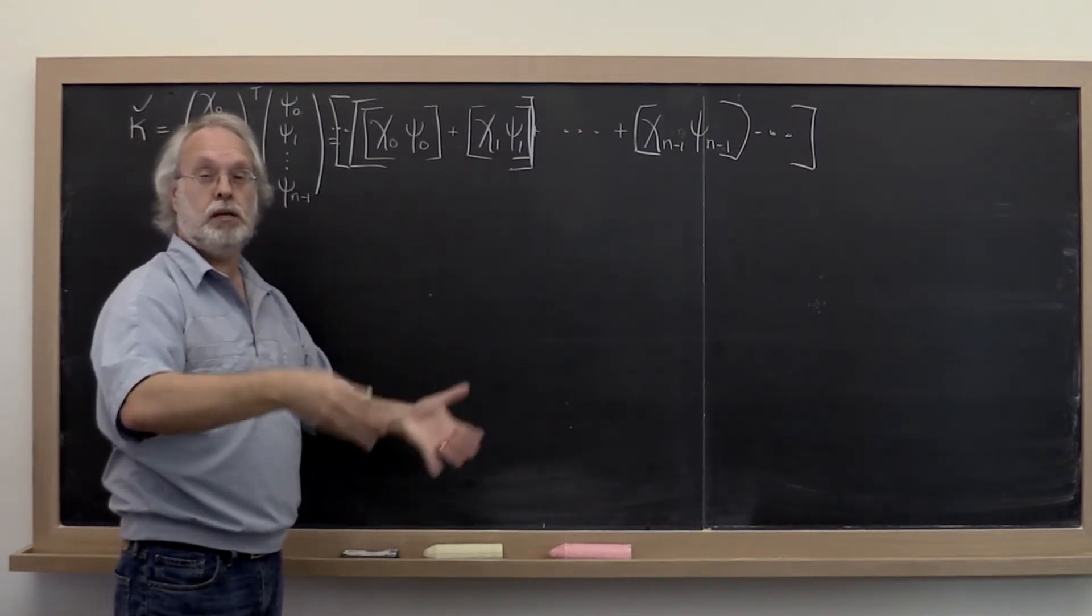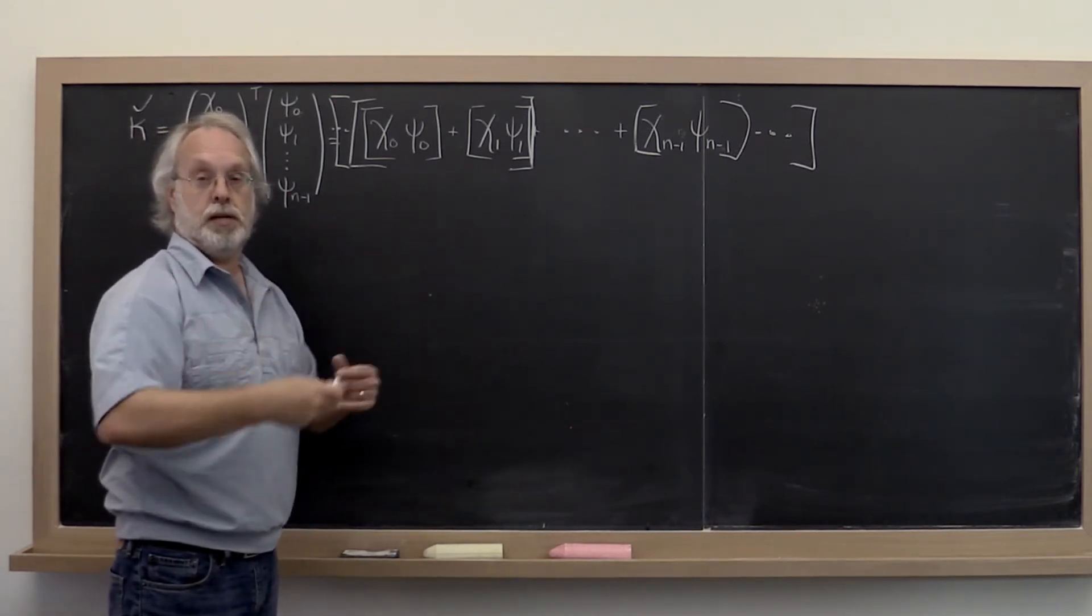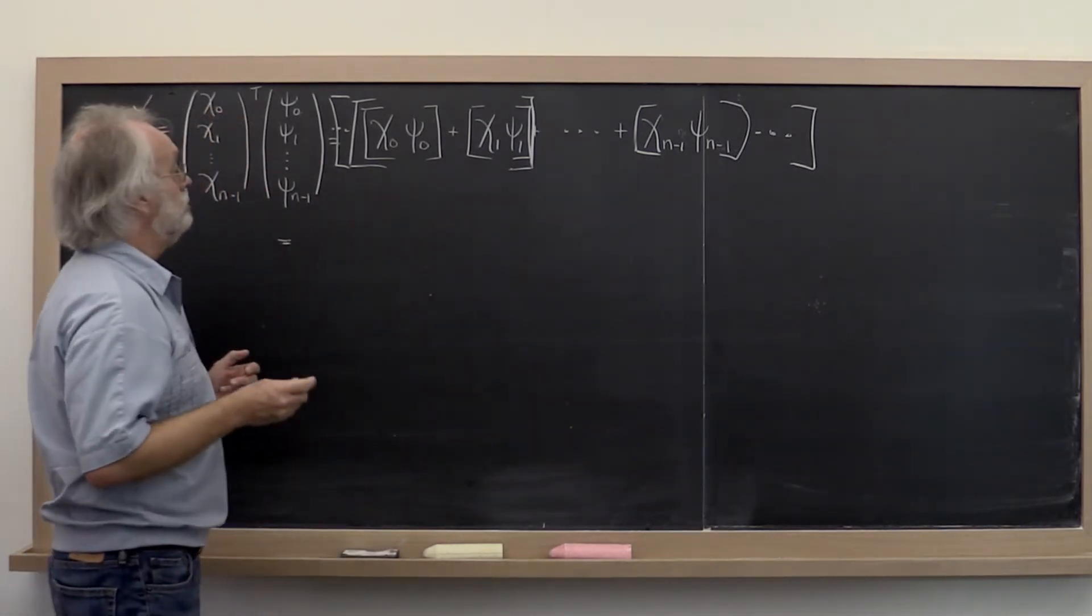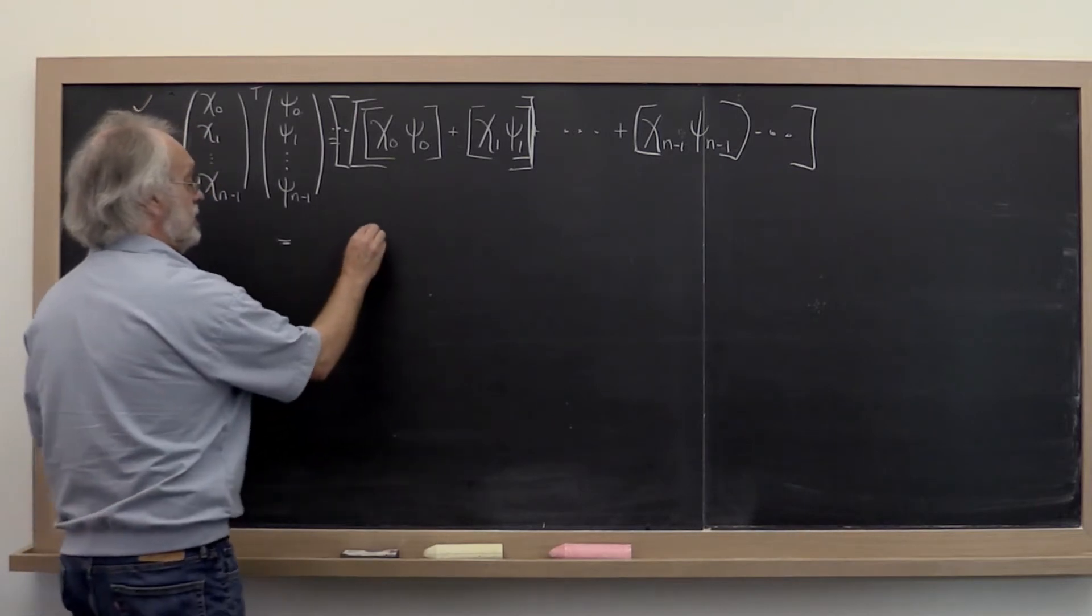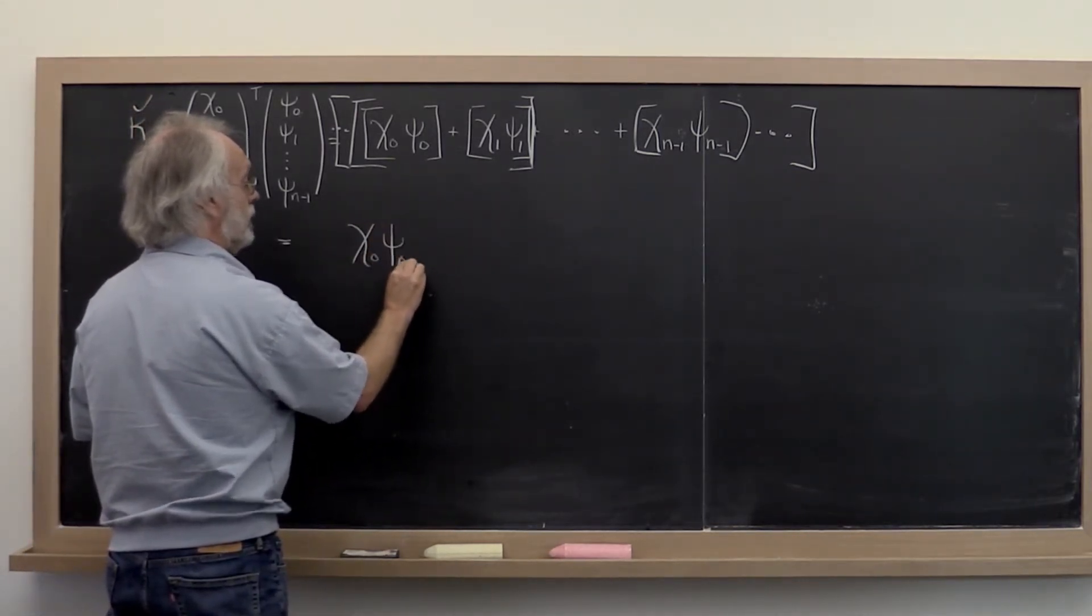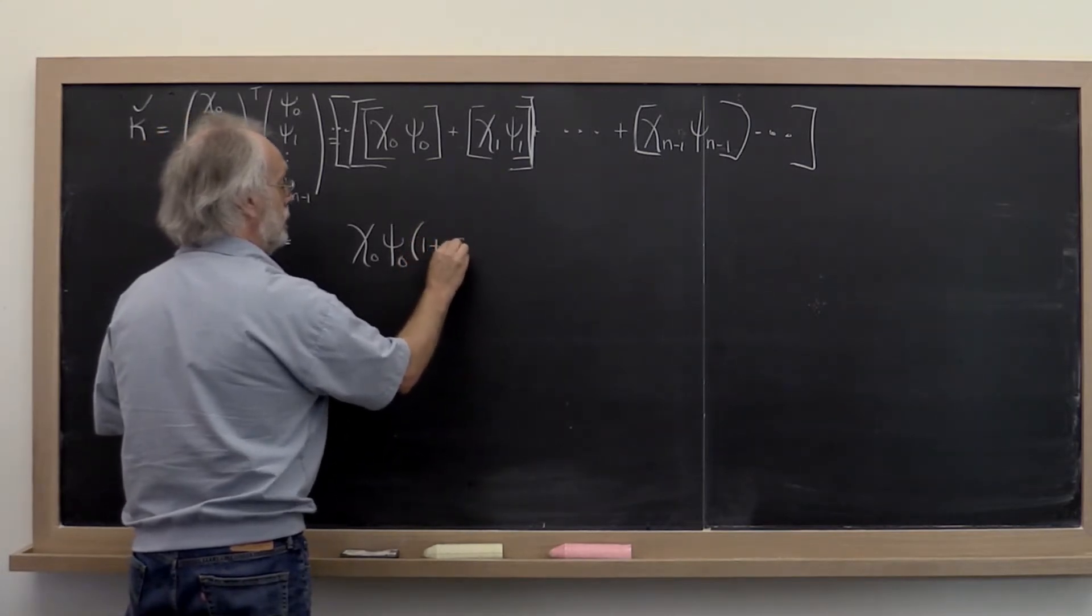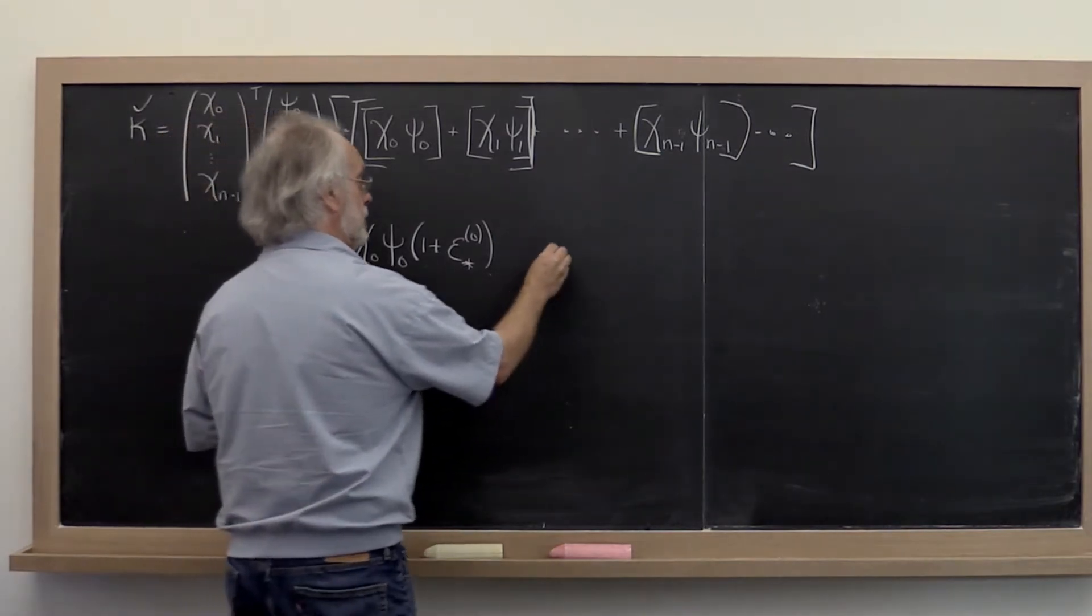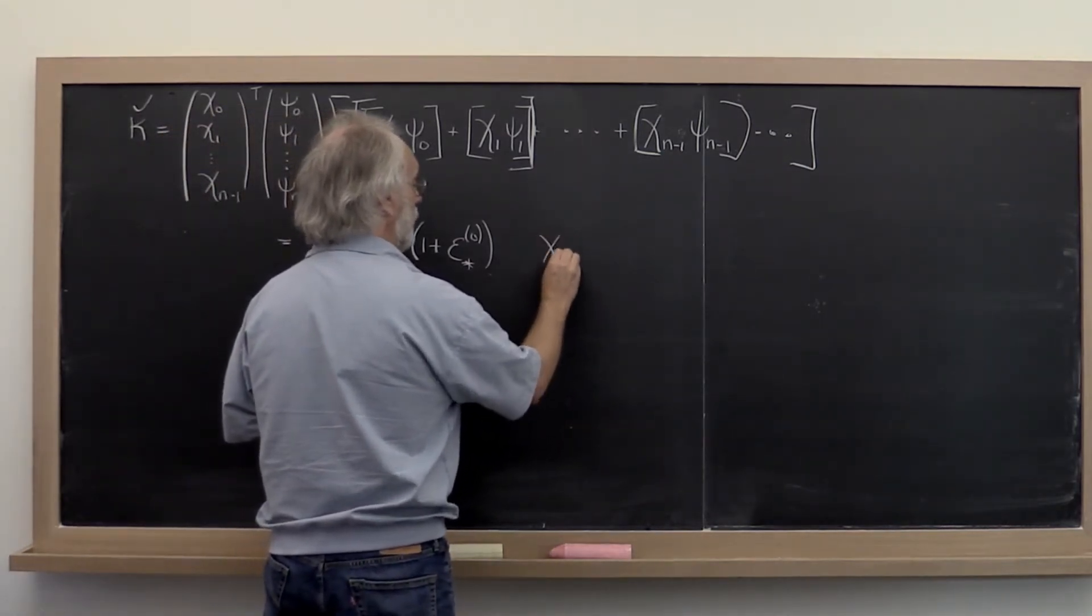Now how do these epsilons come in that come from the standard computation model? Well, it means that when we do this first multiplication, we incur an error. When we do the second multiplication, we incur an error.